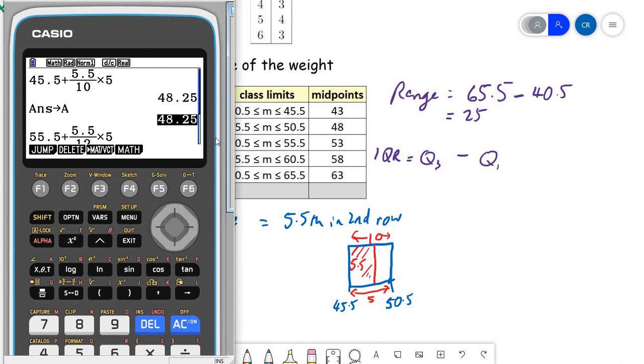So I've done that on the calculator. So 48.25 is what we should have.